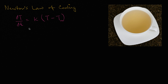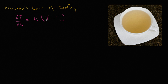Now one thing you might be thinking: if the temperature is hotter than the ambient temperature, then I should be cooling — my temperature should be decreasing. A decreasing temperature would imply a negative instantaneous rate of change. So how will this be a negative value in the case where our object's temperature is greater than our ambient temperature? The way that would happen is you would have to have a negative K.